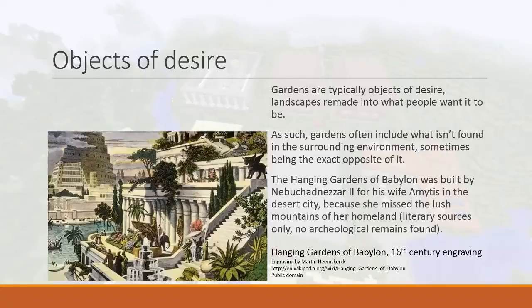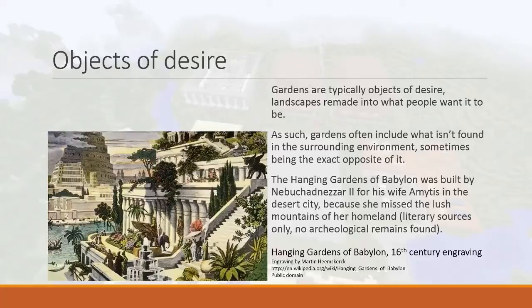Nebuchadnezzar II's wife moved to the desert city of Babylon and was not impressed by all the sand and desert. According to the story, the king built the Hanging Gardens for her to remind her of her home — pavilions, plants, trees, and flowers everywhere. Although this comes from literary sources only, there are no actual archaeological remains for the Hanging Gardens of Babylon. Whether it actually existed, we don't know, but the story is still interesting.